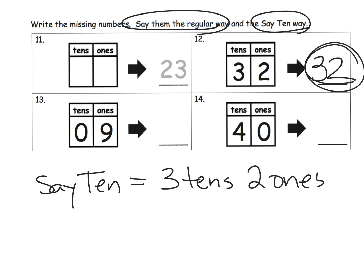Similarly, right here, what's our number? Our number is 9, and our say 10 method would be zero tens, nine ones.